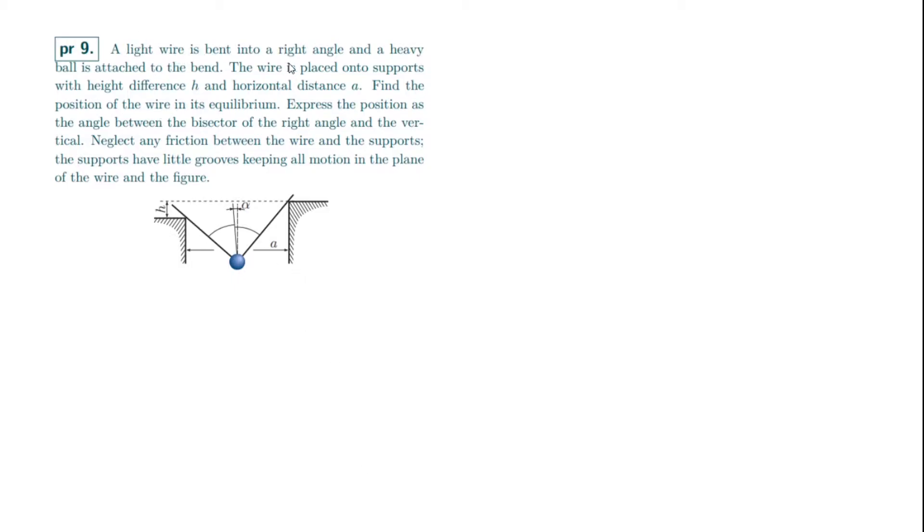A light wire is bent into a right angle and a heavy ball is attached to the bend. The wire is placed onto supports with height h and horizontal distance a. Find the position of the wire in its equilibrium. Express the position as the angle between the bisector of the right angle and the vertical. Neglect any friction between the wire and the supports. The supports have little grooves keeping all motion in the plane of the wire and the figure.